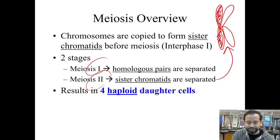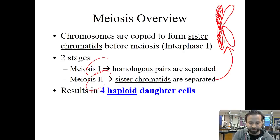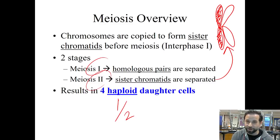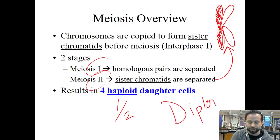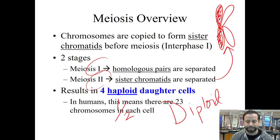The result is that we get four haploid daughter cells. Haploid means half the number of chromosomes, so what is it called when you have the full number of chromosomes? It's called diploid. In humans, this means there are 23 chromosomes in each haploid cell.